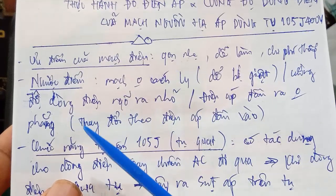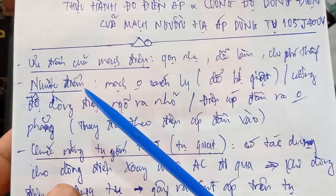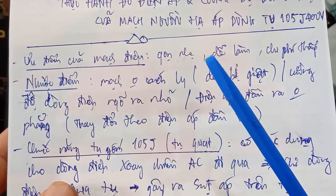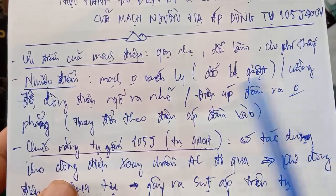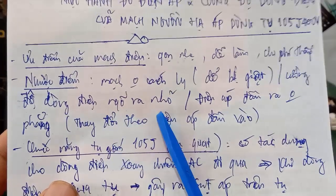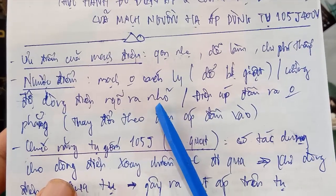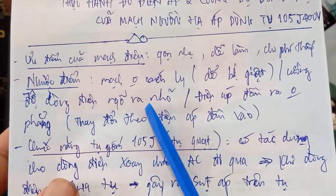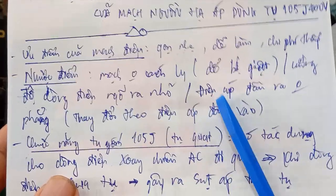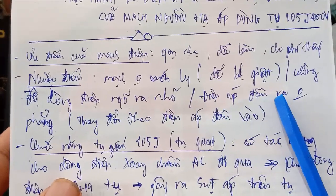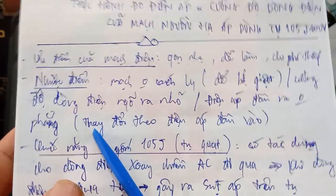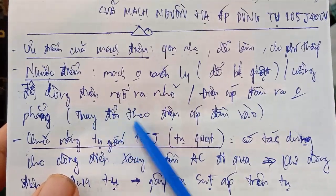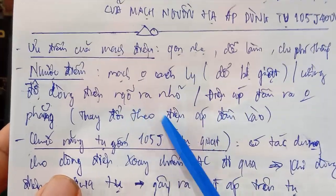Nhược điểm của mạch điện là đây là mạch không cách ly, nó dễ bị giật. Cường độ dòng điện ra rất nhỏ và phụ thuộc vào tải. Điện áp đầu ra không phẳng, bị thay đổi theo điện áp đầu vào.